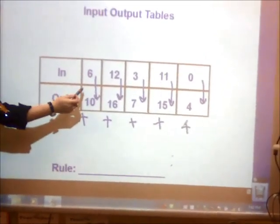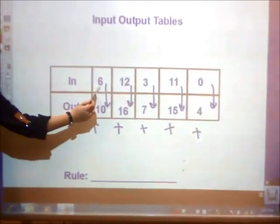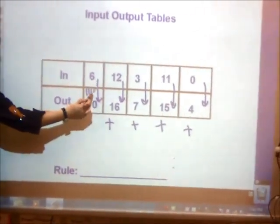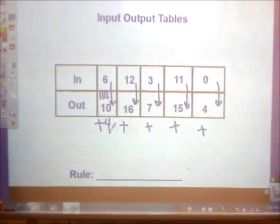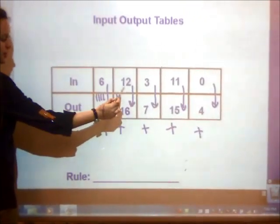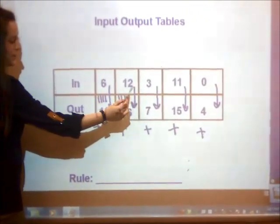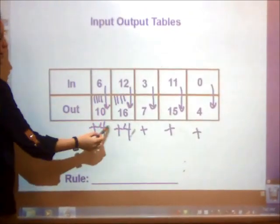I'm going to use tally marks to help me. Let's start with 6. 6, 7, 8, 9, 10. I'm increasing by 4. Let's check our next one. 12, 13, 14, 15, 16. My first two are increasing by 4, but I need to check the rest just to make sure.